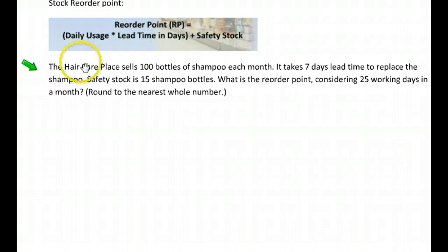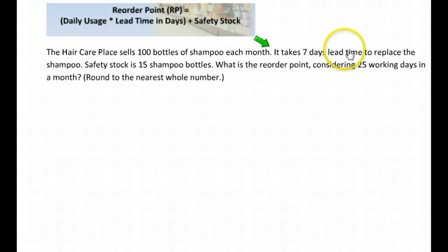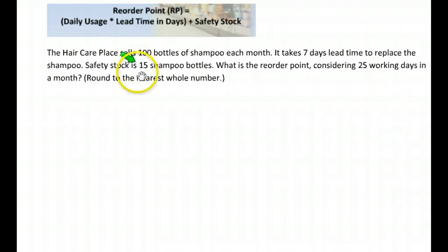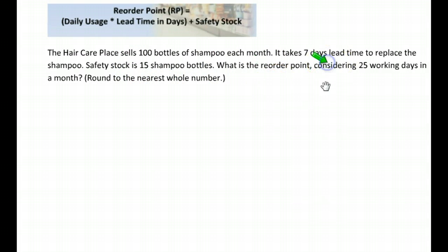Let's do an example. A hair care place sells 100 bottles of shampoo each month. It takes seven days lead time to replace the shampoo. The safety stock is 15 shampoo bottles. What is the reorder point, considering 25 working days in a month?